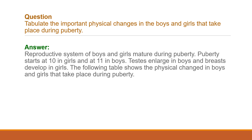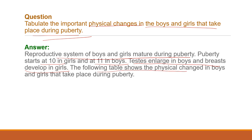The next question is: tabulate the important physical changes in boys and girls that take place during puberty. The reproductive system of boys and girls matures at the age of puberty. Puberty starts at age 10 in girls and 11 in boys. Testes enlarge in boys and breasts develop in girls. The following table shows physical changes in boys and girls during puberty.